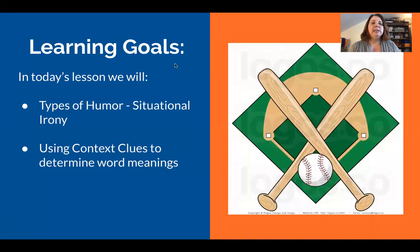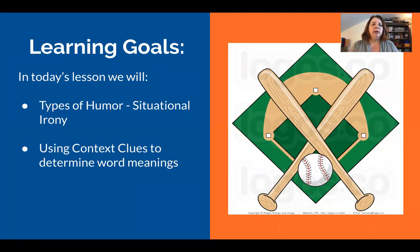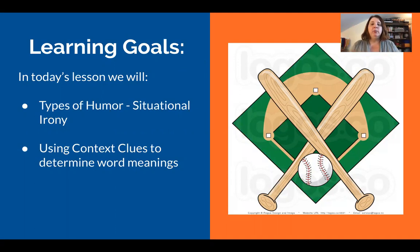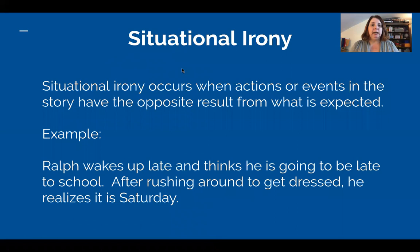Our learning goals: in today's lesson we will uncover another type of situational humor and it is called situational irony, and we're going to see that on pages 61 to 63. We're also going to be using context clues to determine the meanings of unknown words, because as a white reader we're always trying to increase our vocabulary both written and reading.